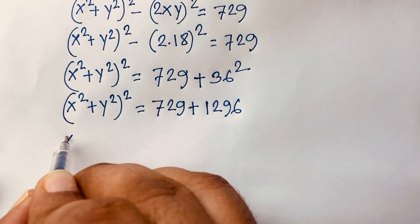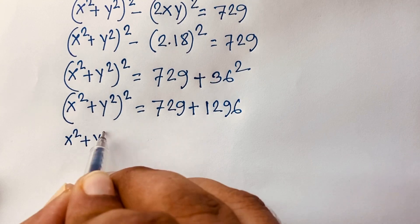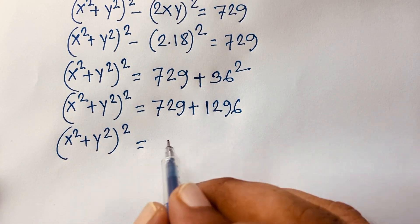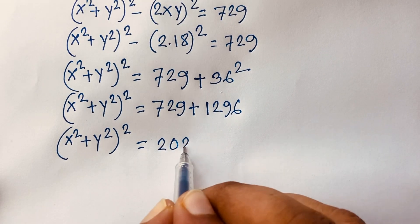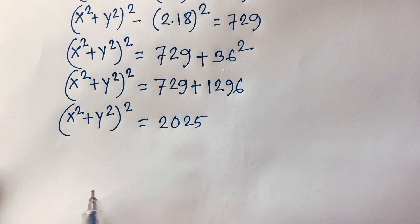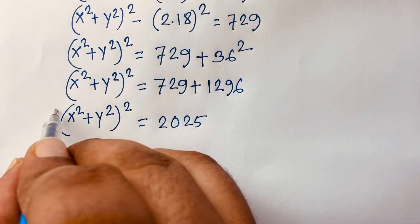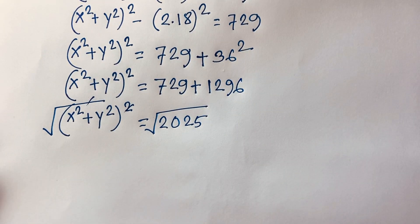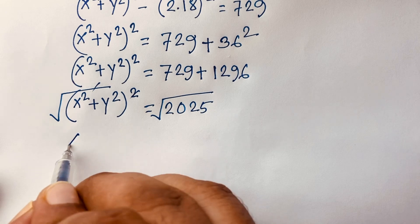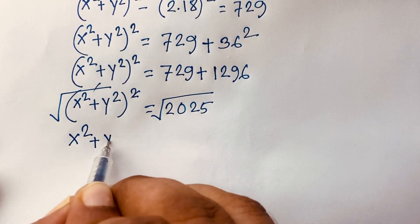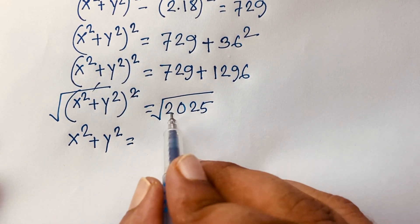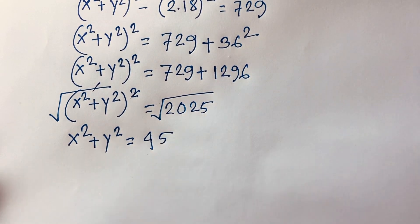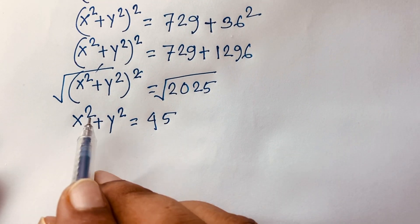Then 729 plus 1296 equals 2025. I use both sides square root, the square root is cancelled, so we find out x squared plus y squared is equal to the square root of 2025, which is 45.